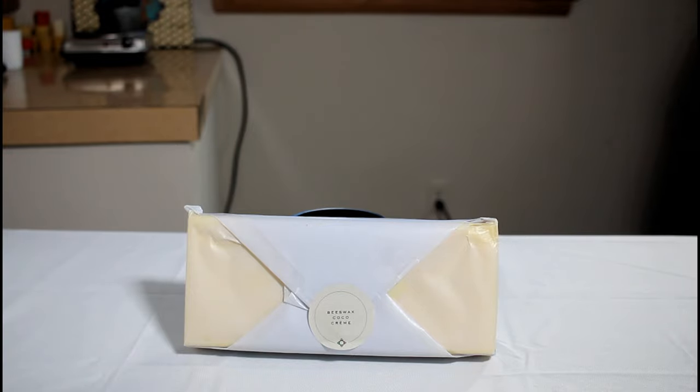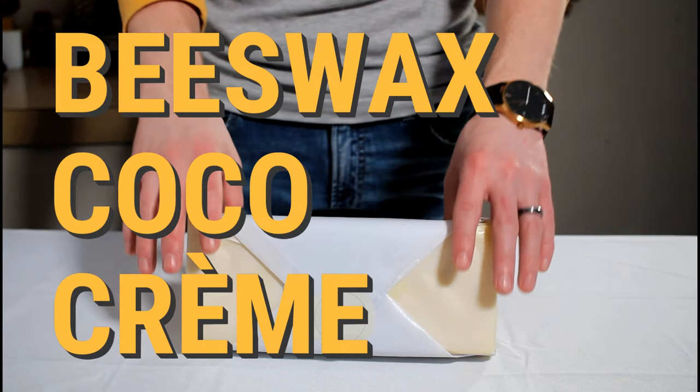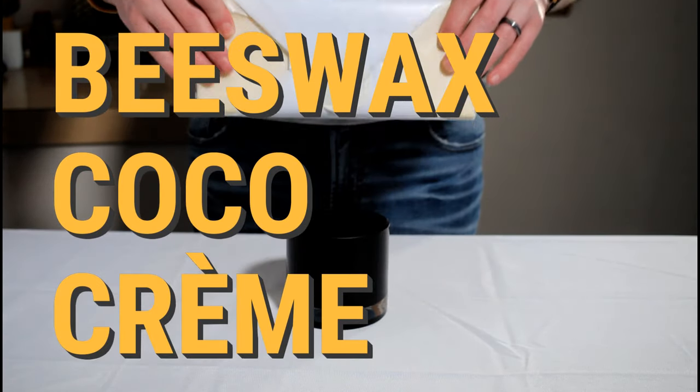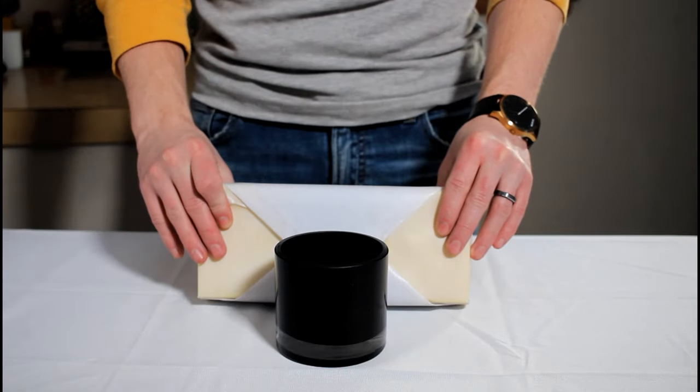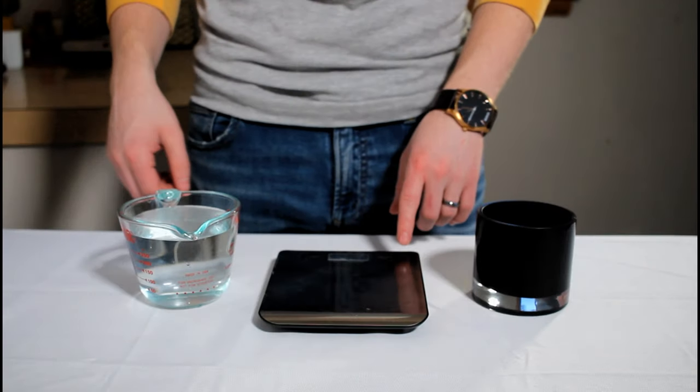Hello everyone, welcome back to Armitage Candle Company. In today's episode, we're going to make a candle out of beeswax cocoa cream wax. We're going to place it in a fancy looking jar that I picked up from Hobby Lobby. You can follow along with any jar you want.